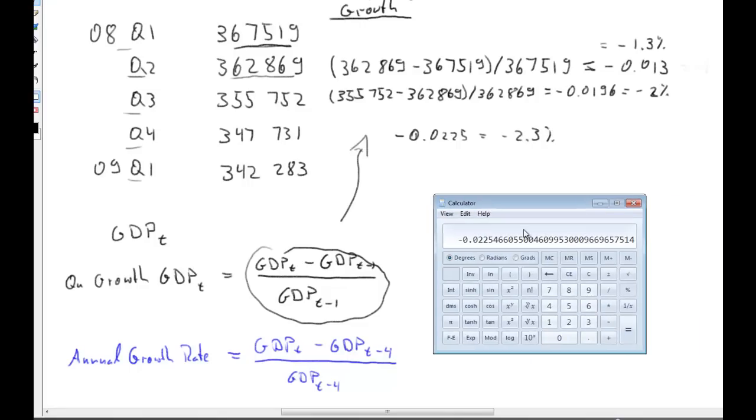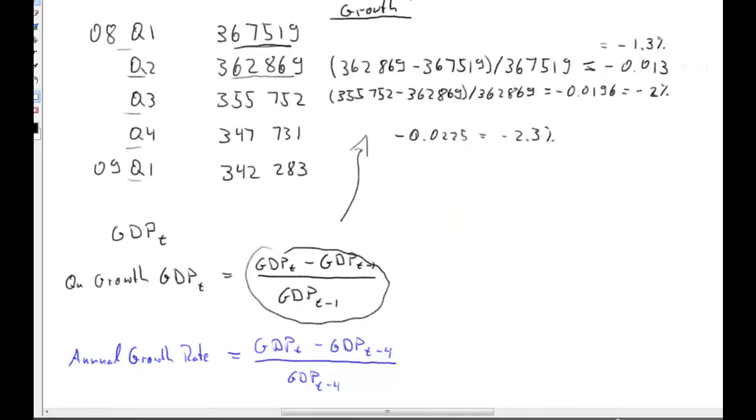And then lastly, we get 342,283 minus 347,731 equals divided by 347,731. So, that is about negative 1.6%.